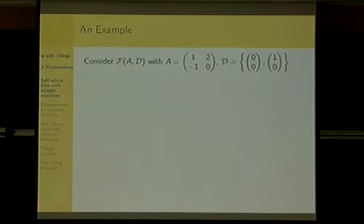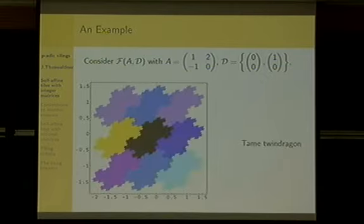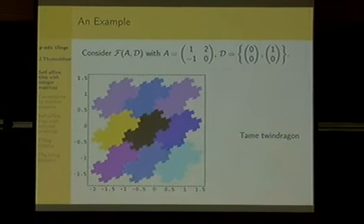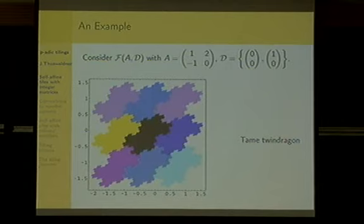Let me give a small example. If you take this matrix and this digit set, you get the so-called twin dragon, which is quite well known. This forms a tiling with respect to Z^2 according to the result of Lagarias-Wang. Of course, for a single given tile, you can decide algorithmically whether you get a tiling or not.